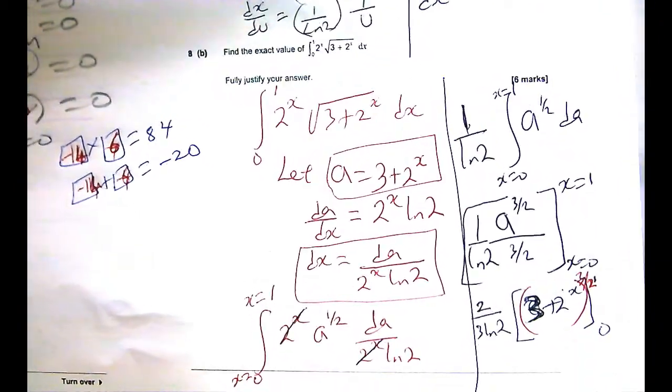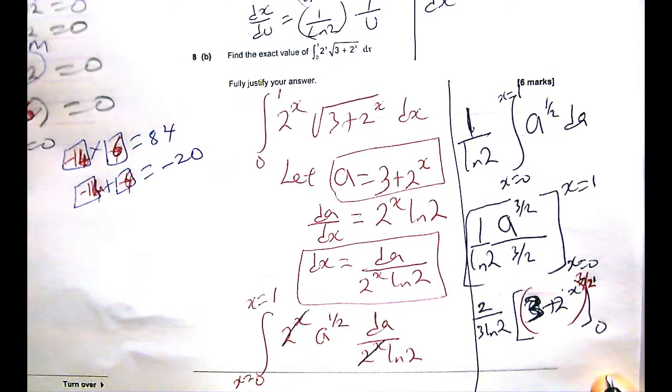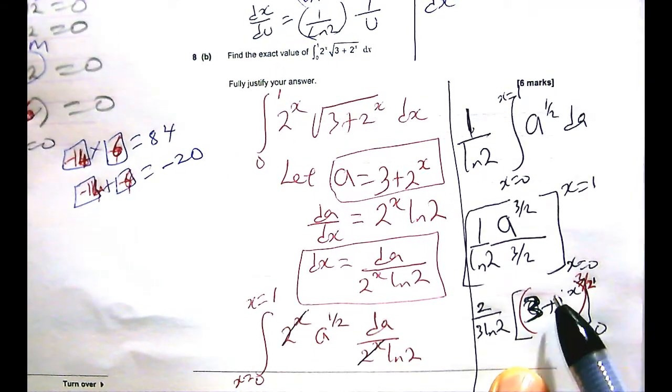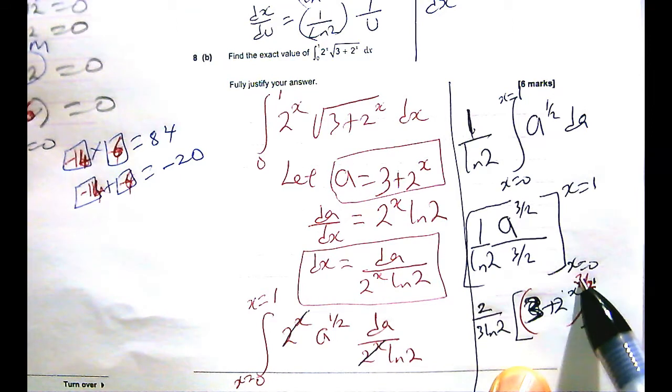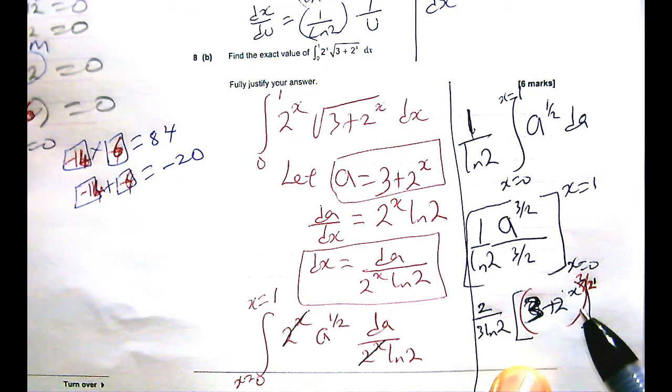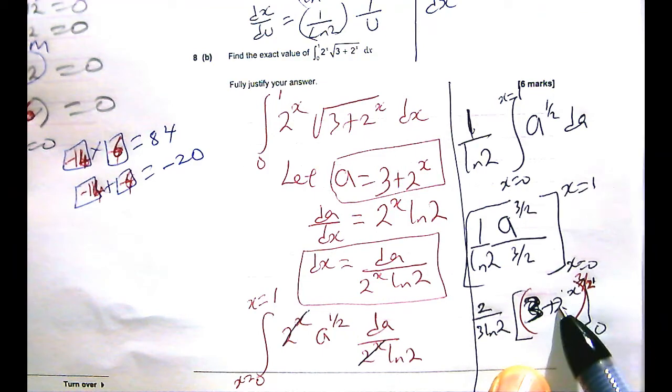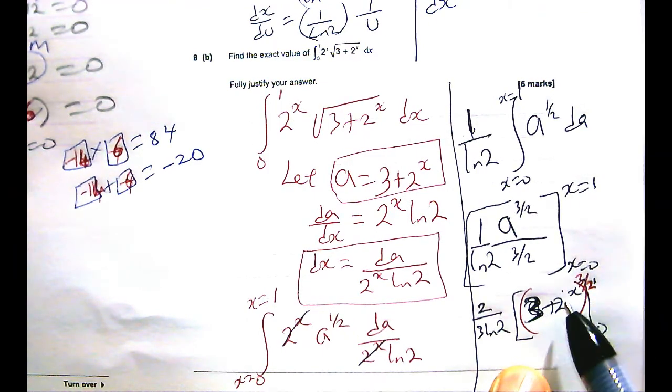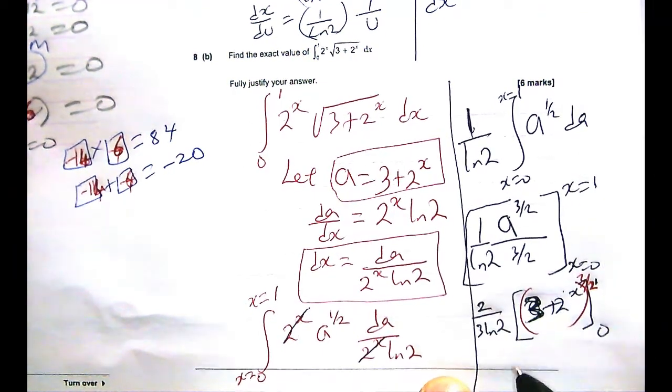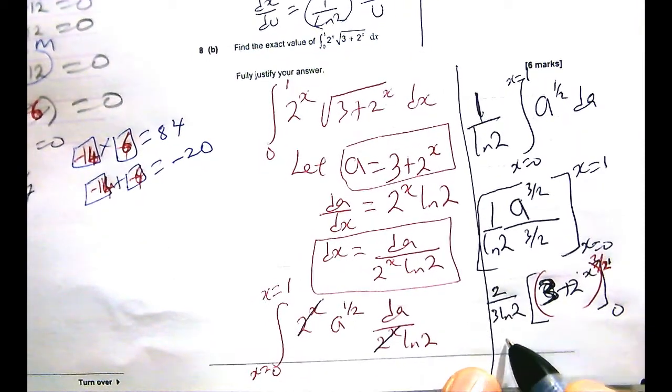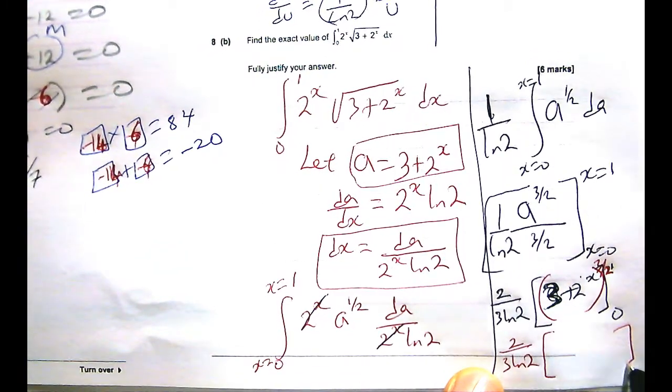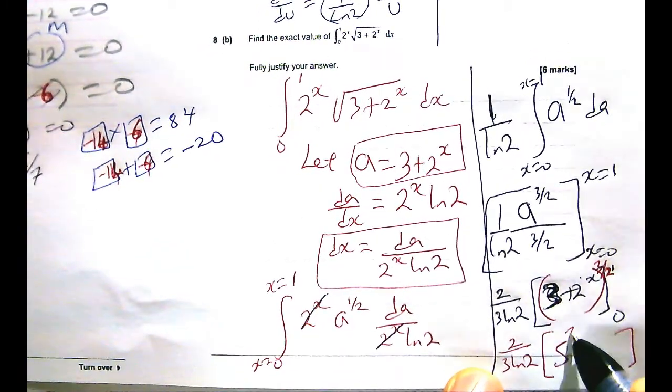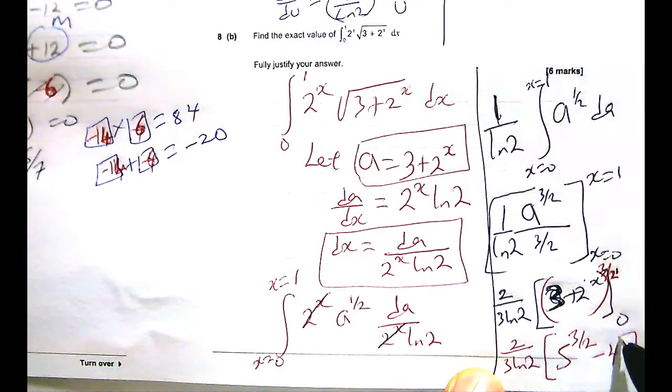Okay. So let's see what happens when x is at 0. So when x is 0, that's just 1, right? So you have 3 plus 1 all to the power 3 over 2. When x is at 1, what you have there is 2 to the power 1, which is 2. So you have 3 plus 2, which is 5. So I end up with 2 over 3 lin 2 outside. Then I have 5 to the power 3 over 2 minus 4 to the power 3 over 2.